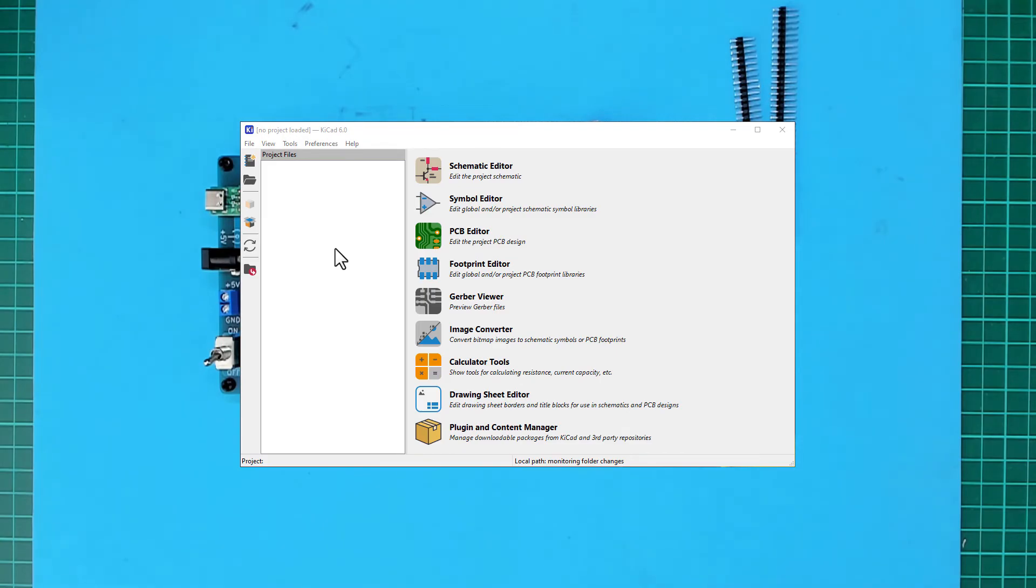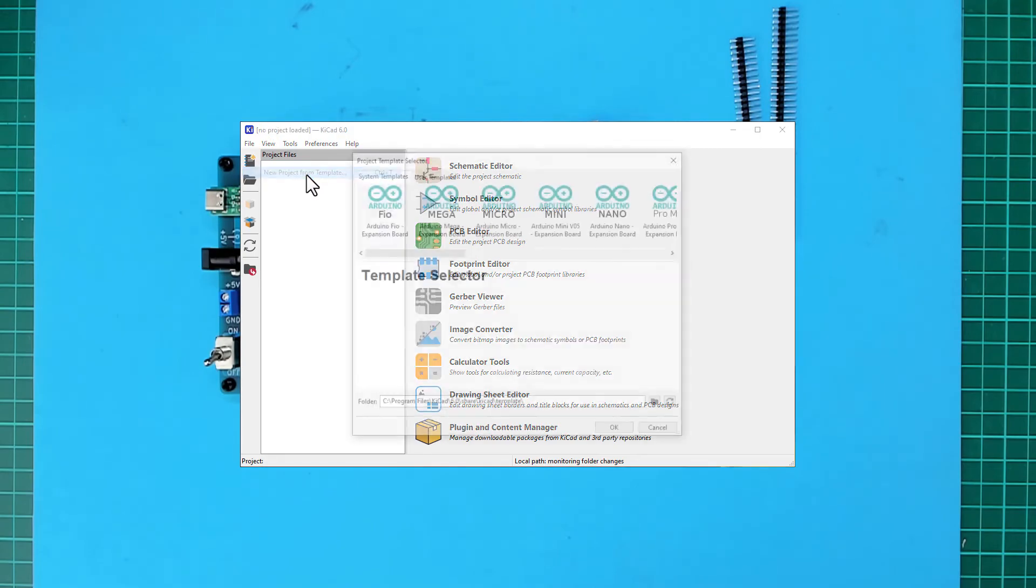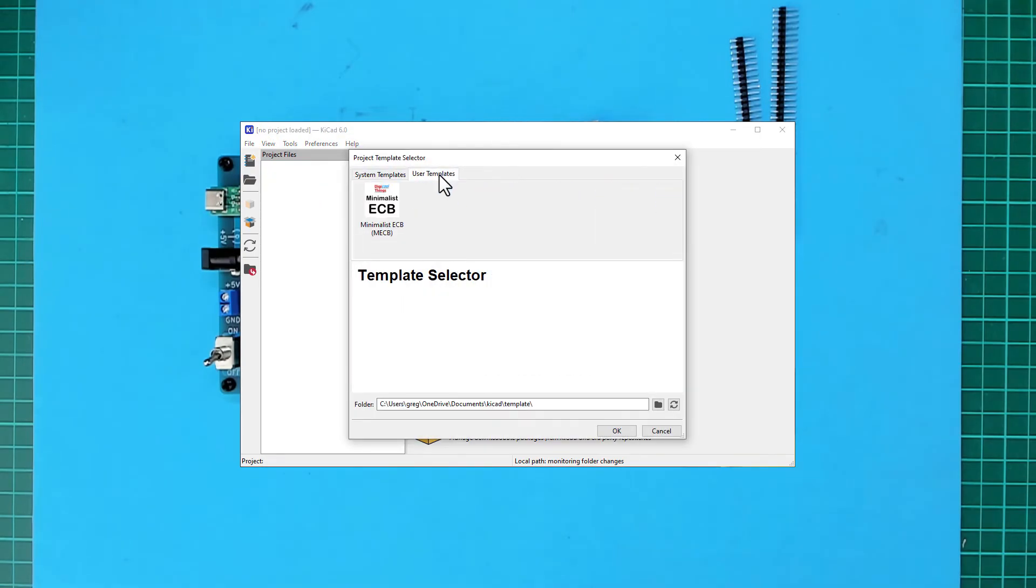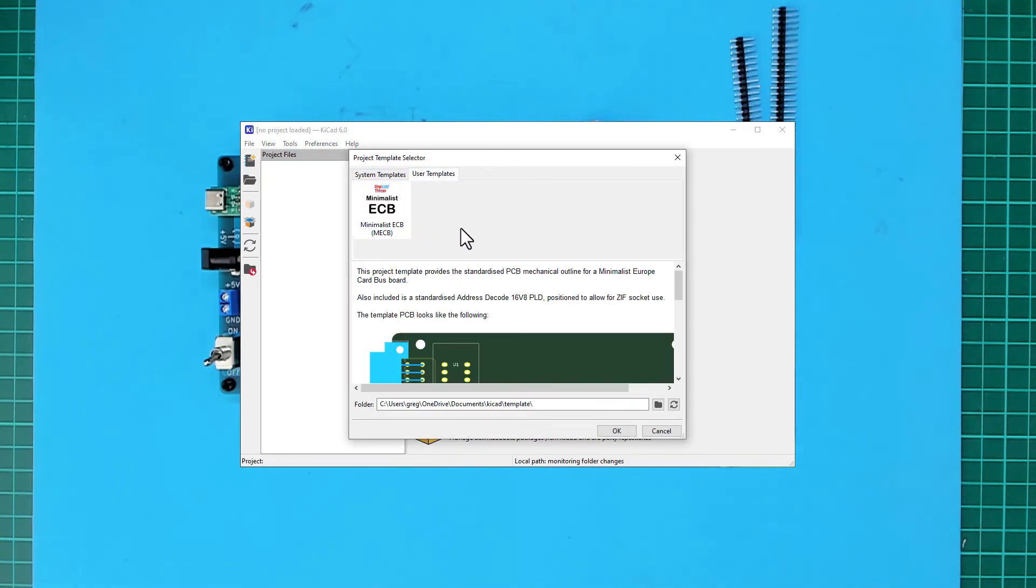Right. So let's start off by creating a new KiCad project from the standard template. So I'll go file, new project from template, user template, minimalist ECB. MECB. OK.